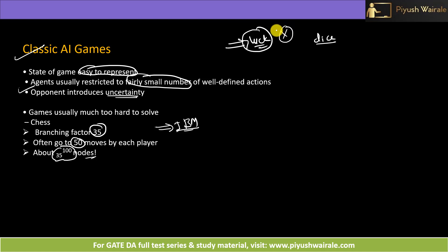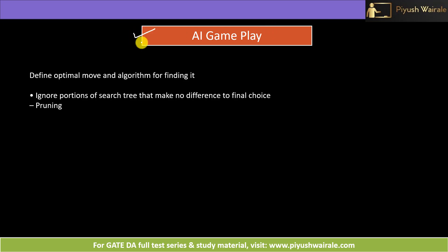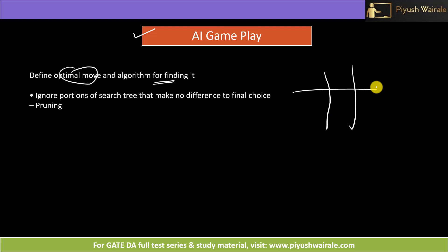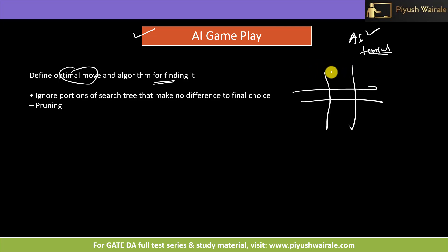AI gameplay defines the optimal move and the algorithm for finding it. For tic-tac-toe, AI should know how to play the game: what is the terminal state, when the game finishes, when it wins, and when the opponent wins. There are cases where we can ignore portions of the search tree that make no difference to the final choice — that is basically pruning. We will discuss that also.